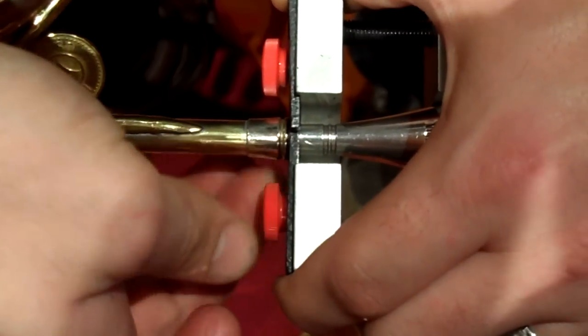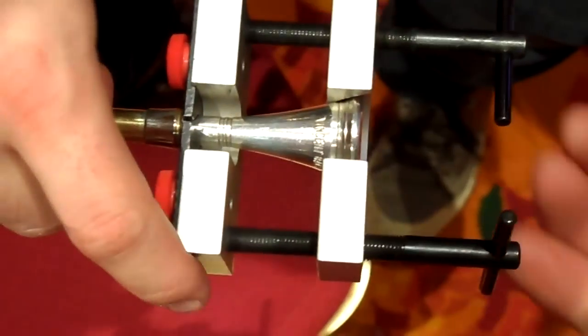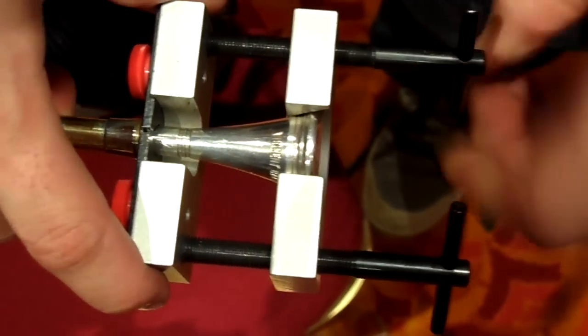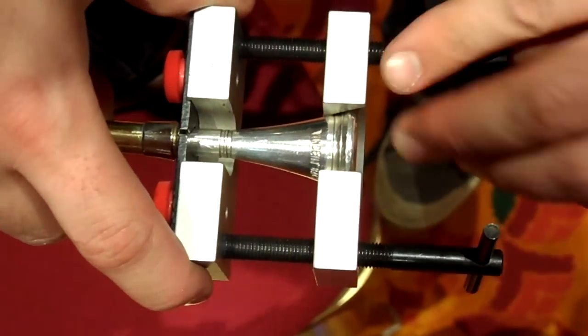We're going to put it down like this, and then we're going to tighten these knobs. It's going to set these in place, and then we just got to turn these two screws, and our mouthpiece is going to pop right out.